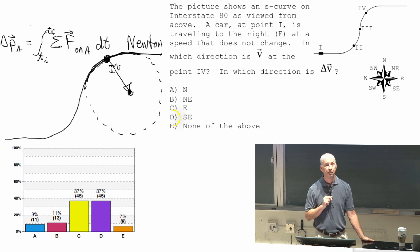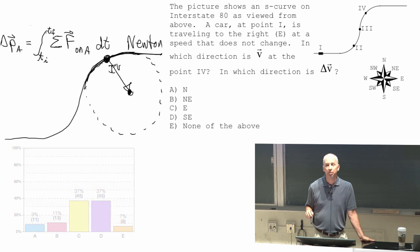And toward the center of the circle means southeast if you're at point four. If you're at point two, toward the center of the circle would mean northwest.